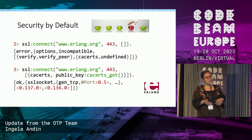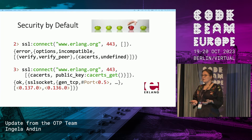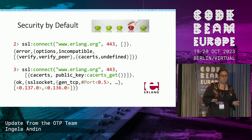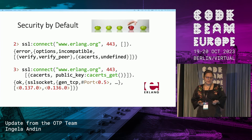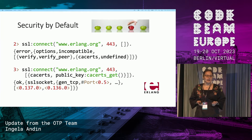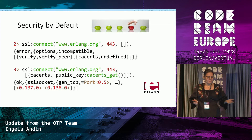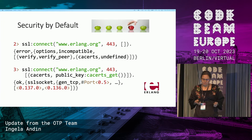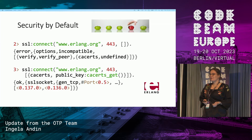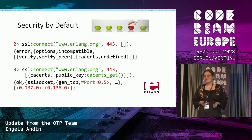Most web servers put their trust in a certificate bundle distributed by the operating system. We now have a public key function so that you can easily load these and get an authenticated connection towards web servers, such as www.erlang.org. And if you'd like to know more about certificates, I will give a talk tomorrow about building trust in open networks.